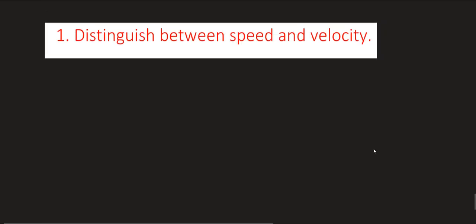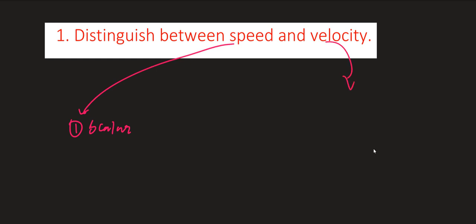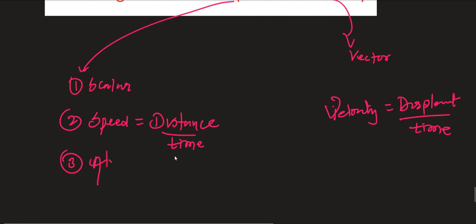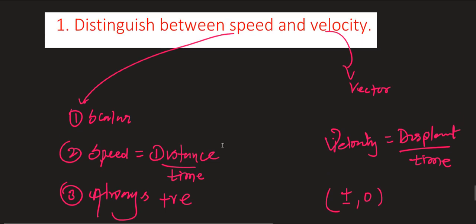Distinguish between speed and velocity. Regarding speed, you have to write at least three points. First: speed is a scalar quantity, while velocity is a vector quantity. Second: speed = distance / time, while velocity = displacement / time. Third: speed is always positive, but velocity may be positive, negative, or zero during motion. These are the differences you must remember.